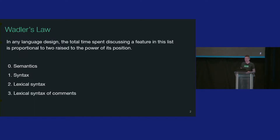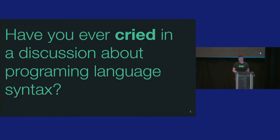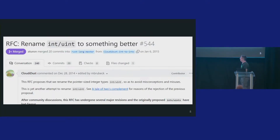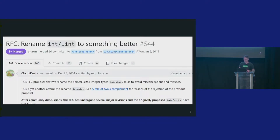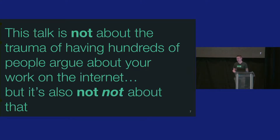This is a very real thing that happens when talking about language design. The emotional intensity of debate on a language feature increases as you go down the scale — people tend to get really emotional when talking about programming language syntax. Have you ever cried in a discussion about programming language syntax? I've only cried when discussing what integers should be named. This was a real, giant debate in the Rust world. Naming what int should be named got 240 comments in a GitHub thread alone. There were many more, and it was actually very emotionally trying.